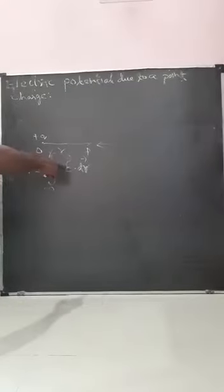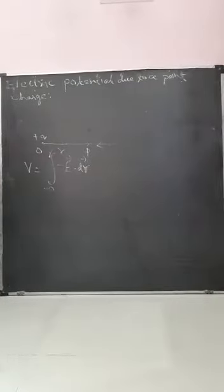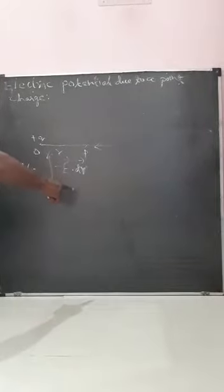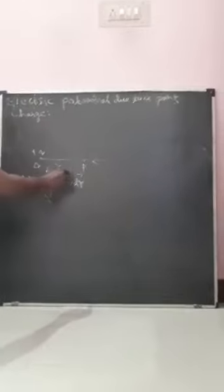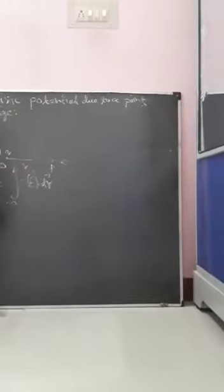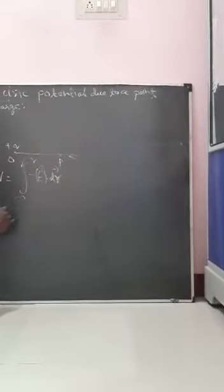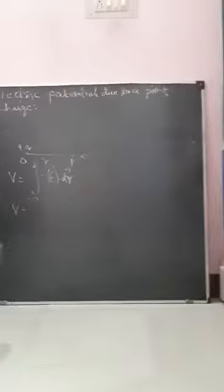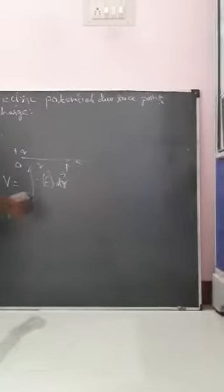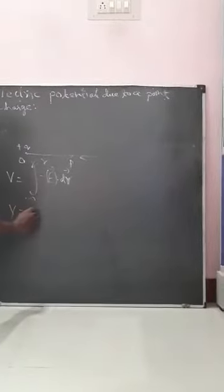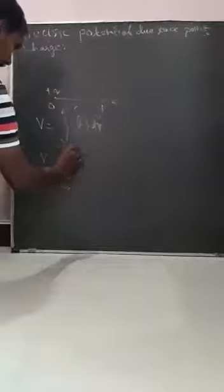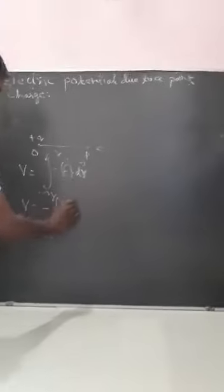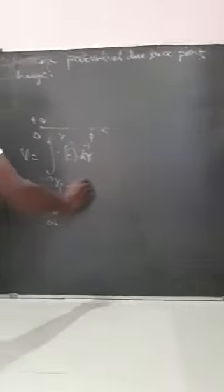Next you are going to find the electric field. The electric potential is V equal to minus the integral from infinity to R of E vector dot dr vector.